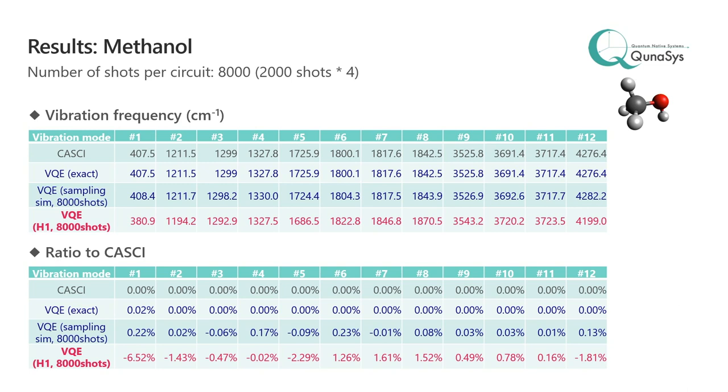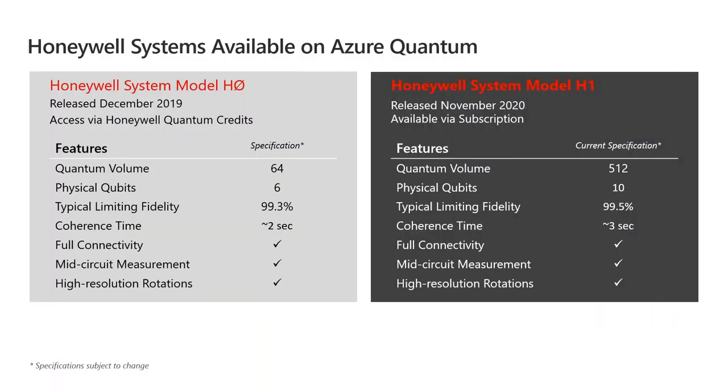So this is really exciting. They're able to accurately represent the vibration levels of these small but still interesting molecules and give us the tools we need to scale this up to larger systems as the hardware increases in capacity. So on the next slide we can see that we have two systems available on Azure Quantum right now. Honeywell system model H0 which is an older system which has six physical qubits and system model H1 which is used for these demonstrations today which has 10 physical qubits and a limiting fidelity set by our two qubit gate fidelity of greater than 99.5 percent. And we're really excited for you to get on and use these systems to do similar demonstrations and really push the limits of what's possible algorithmically to understand the quantum world around us.